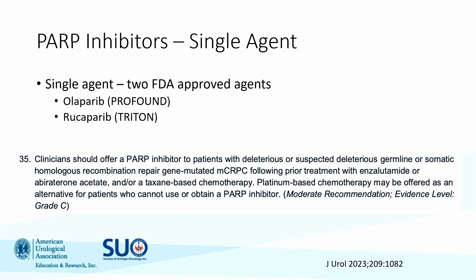PARPs can be given as single agents or in combination. In the single-agent setting there are two FDA-approved agents, approved ahead of the updated AUA guideline. As the guidelines state, we should offer PARP inhibitors to patients who have deletions or suspected deletions in germline or somatic HRR-mutated metastatic castration-resistant prostate cancer who have had prior therapy — either enzalutamide, abiraterone, or chemotherapy. For patients unable to obtain a PARP inhibitor, platinum-based chemotherapy can be offered as an alternative.